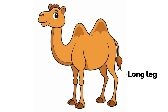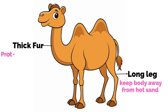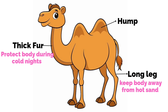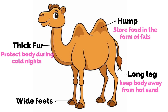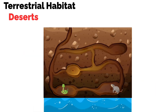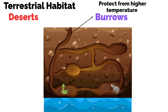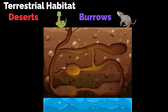Animals like camels have long legs which keep their body away from the hot sand. They have thick fur to protect the body during cold nights. The hump on their body stores food in the form of fats, which provides energy for a long time, while wide feet help them to walk easily on sand. Rats and snakes stay inside burrows present in the deep sand for protection from higher temperatures, and come out when it is cooler, that is, during night.